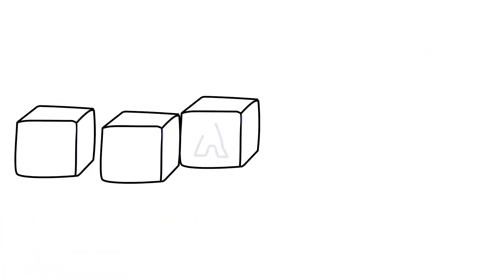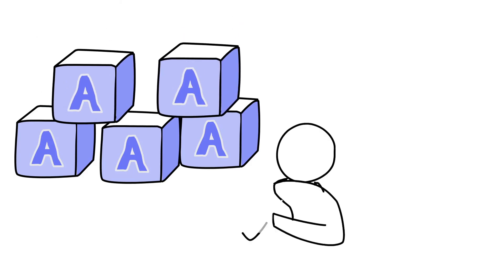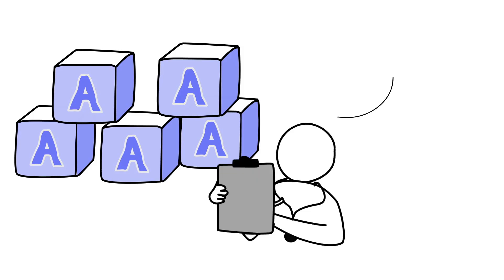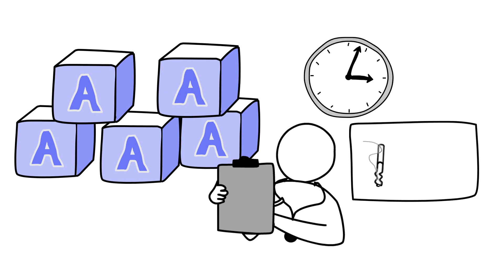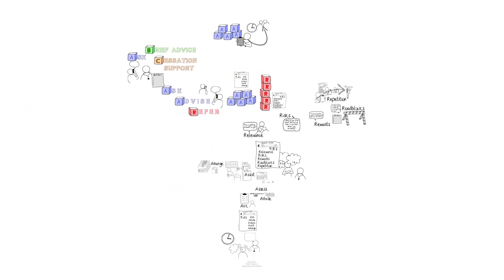In closing, the five A's are a standard and effective approach for brief tobacco intervention. The readiness of the patient to quit tobacco will affect the amount of time required for the intervention, but even a brief intervention of a few minutes can be effective for increased quit rates. Furthermore, if you are not able to counsel a patient fully due to limited time, it is important to refer patients to cessation specialists or other resources in your community. The next video will discuss your role in tobacco control outside of the exam room.